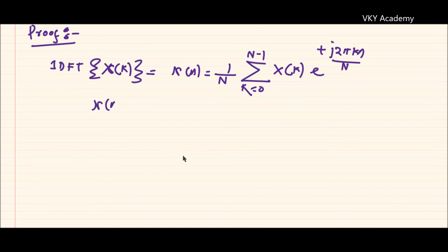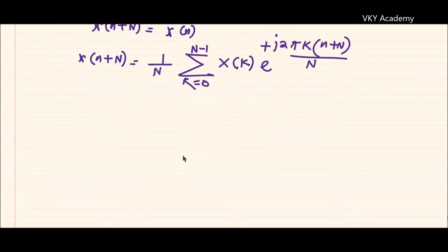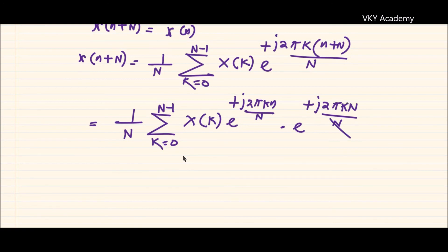Now as we need to prove x(n + N) equals x(n), I can write x(n + N) equals one upon N summation from k equals 0 to N minus 1 of capital X(K) times e to the power plus j two pi k (n + N) upon capital N. This can be written as one upon N summation of capital X(K) times e to the power plus j two pi k n upon capital N, times e to the power plus j two pi k capital N upon N, where capital N and N cancel out.